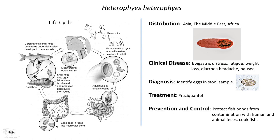Heterophyes heterophyes — at least it's easy to remember the name, like Loa loa. It's another trematode that locates to the small intestine and stays there once ingested. In this case, we eat raw fish in order to catch this infection. It has a similar life cycle to Clonorchis and Opisthorchis. The metacercaria is included in a meal of raw or undercooked freshwater fish. The metacercaria excysts, the immature adult worm locates to the small intestine, they self-fertilize, and the eggs are passed in the stool.